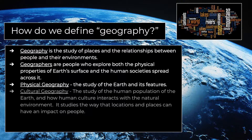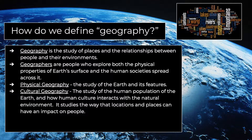Whereas when we talk about cultural geography, we're really talking about people. The definition for cultural geography is the study of the human population of the earth and how human culture interacts with the natural environment. It studies the way that locations and places can have an impact on people — how we relate to the land and the physical geography around us, how it affects us, and how we affect it. That's what we call a two-way relationship.